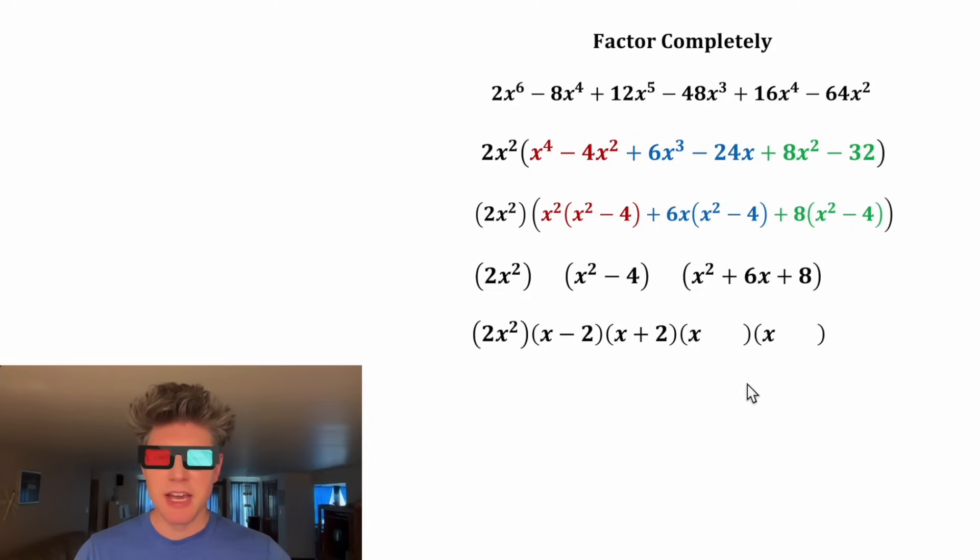And then for this trinomial, we can put the x and the x that'll give us the x squared. And then we need two numbers that add to six and multiply to eight. That'll be two and four. And now everything is fully factored, so we're pretty much done.